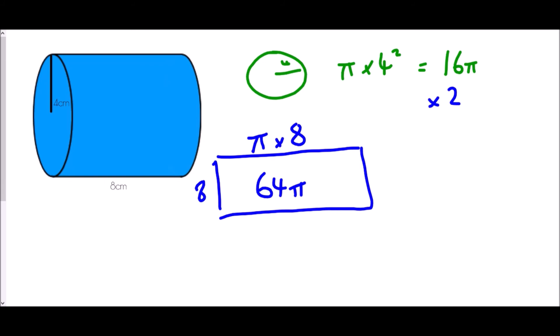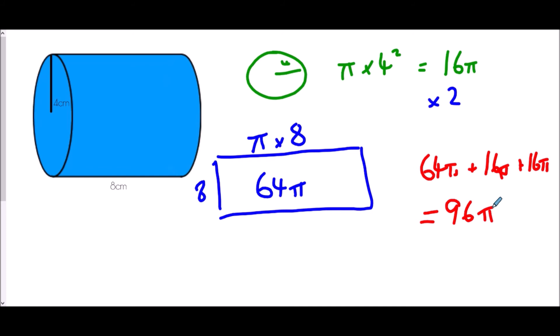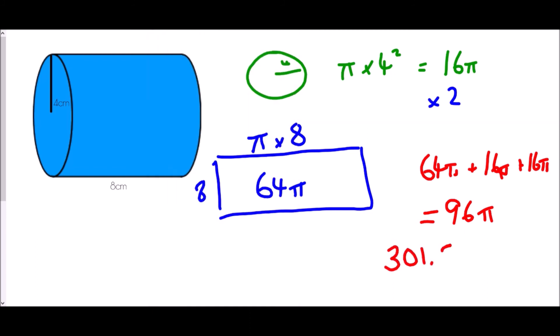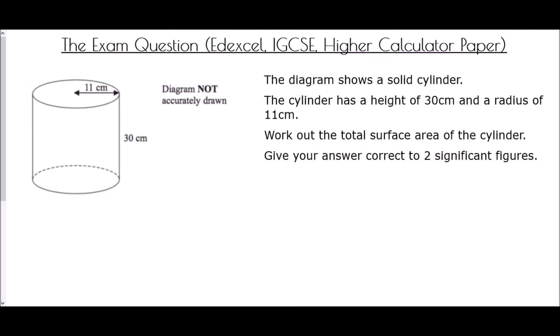Adding all parts together: 64 pi plus 16 pi plus 16 pi equals 96 pi. On a non-calculator paper, 96 pi is the exact answer. On a calculator paper, 96 pi works out to 301.59 centimeters squared.